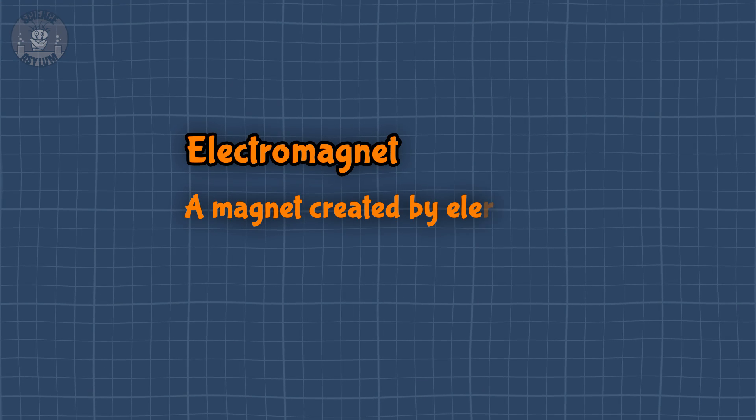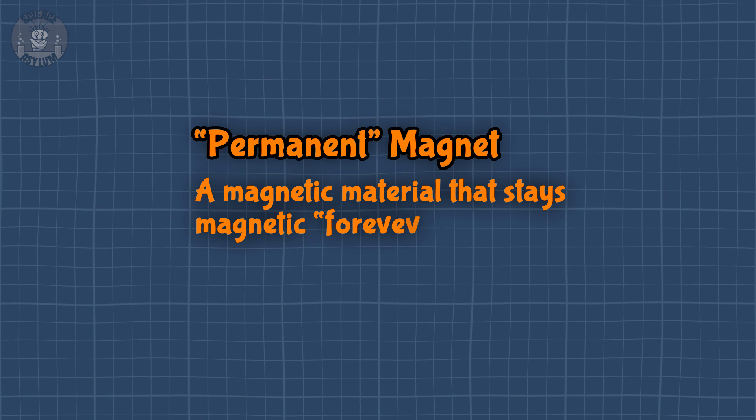An electromagnet is a magnet created by electricity. There isn't any electric current running through a magnet like this though, so it seemed like it should go by a different name.